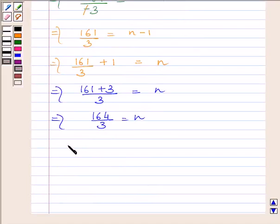Or we can simply write it as n is equal to 164 upon 3. Now this can be written as 54 and 2 upon 3.